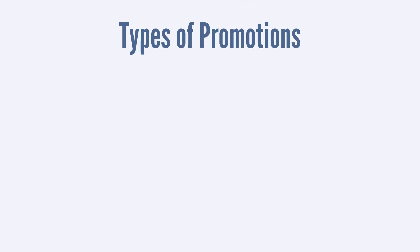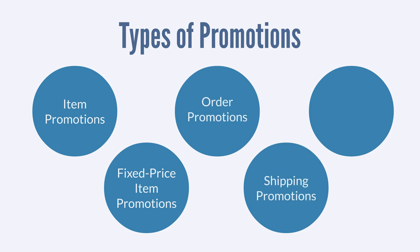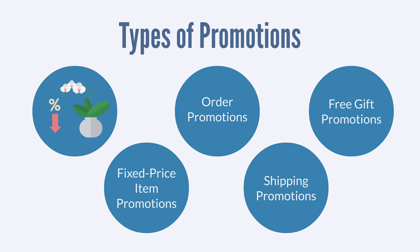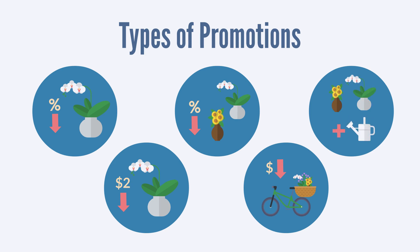First, let's look at the different types of promotions that Suite Promotions provides: Item Promotions, Fixed-Price Item Promotions, Order Promotions, Shipping Promotions, and Free Gift Promotions. Each of these types focuses on providing discounts in specific ways. An Item Promotion provides a discount by removing a set percentage of an item's cost, while a Fixed-Price Item Promotion provides a set discount to an item's cost. An Order Promotion provides a discount by removing a set percentage of an entire order's cost. A Shipping Promotion allows you to remove the cost of shipping from eligible orders, and a Free Gift Promotion adds a specific gift to eligible orders.